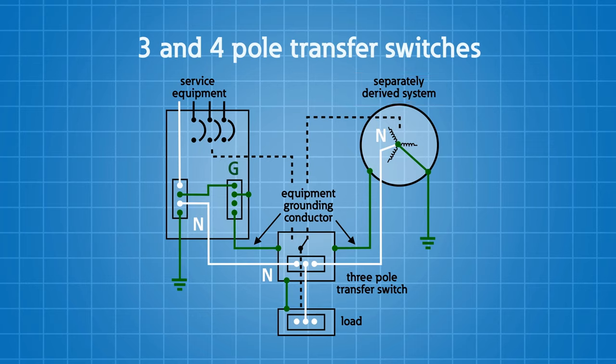So when I have a neutral conductor bonded and grounded in two separately derived systems, remember, I have it grounded and bonded in my service panel. I have it grounded and bonded in my generator. I need to make sure that I only have one place where that occurs. And to get that done, I need to switch the neutral in the transfer switch. So that means I would need to have, say for example, a four-pole transfer switch. If I do that, I put a four-pole transfer switch in, I switch the neutral, everything is fine.